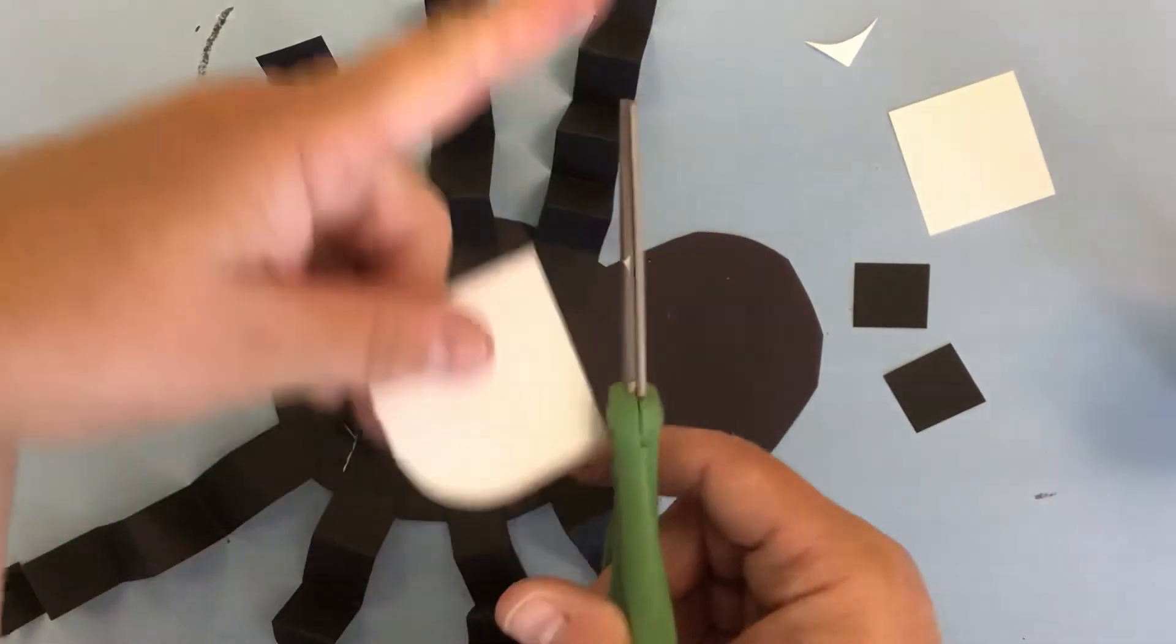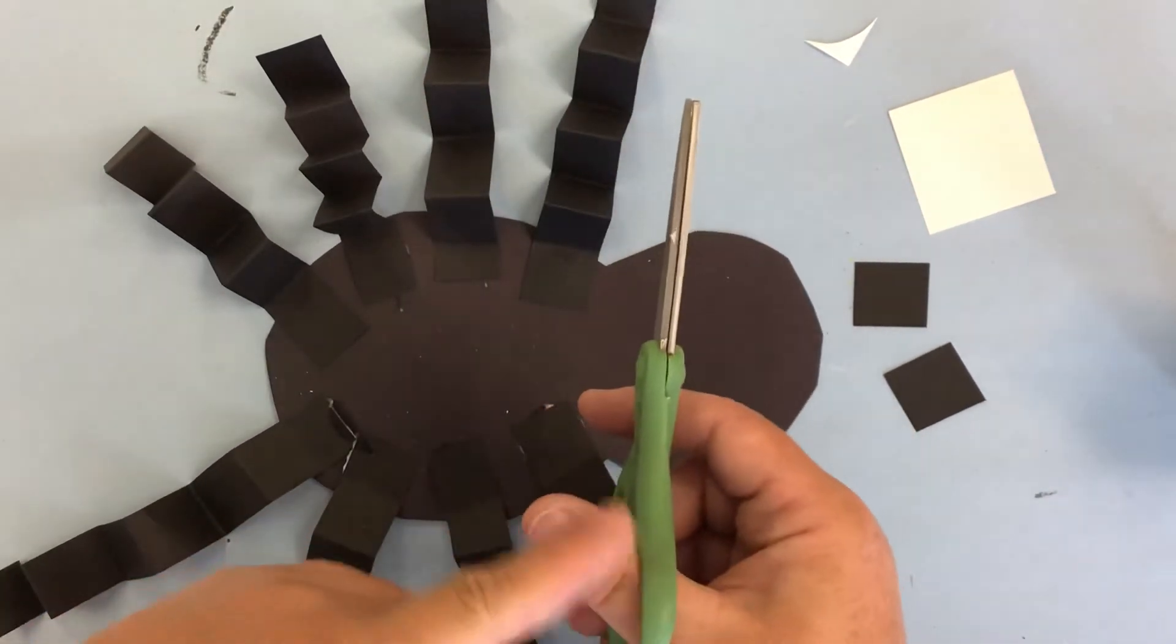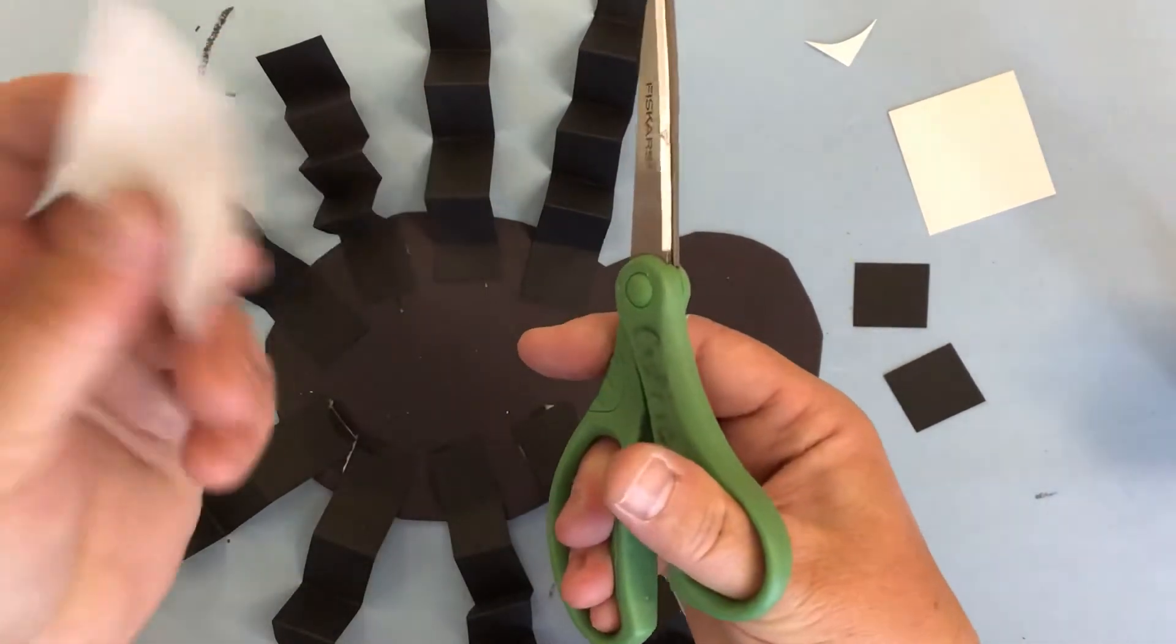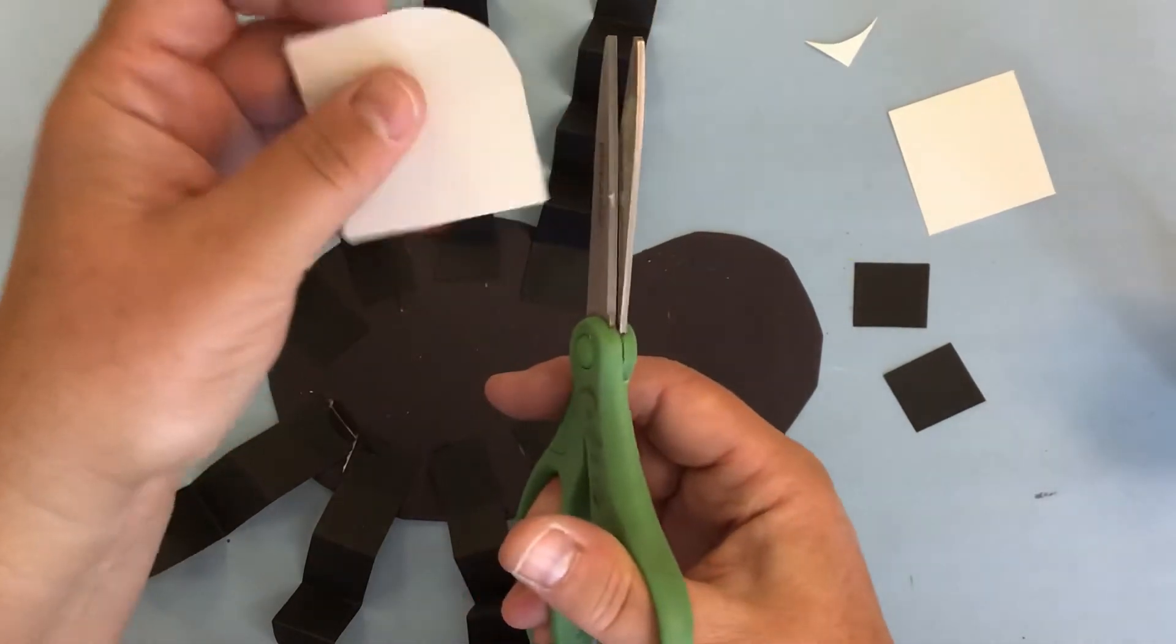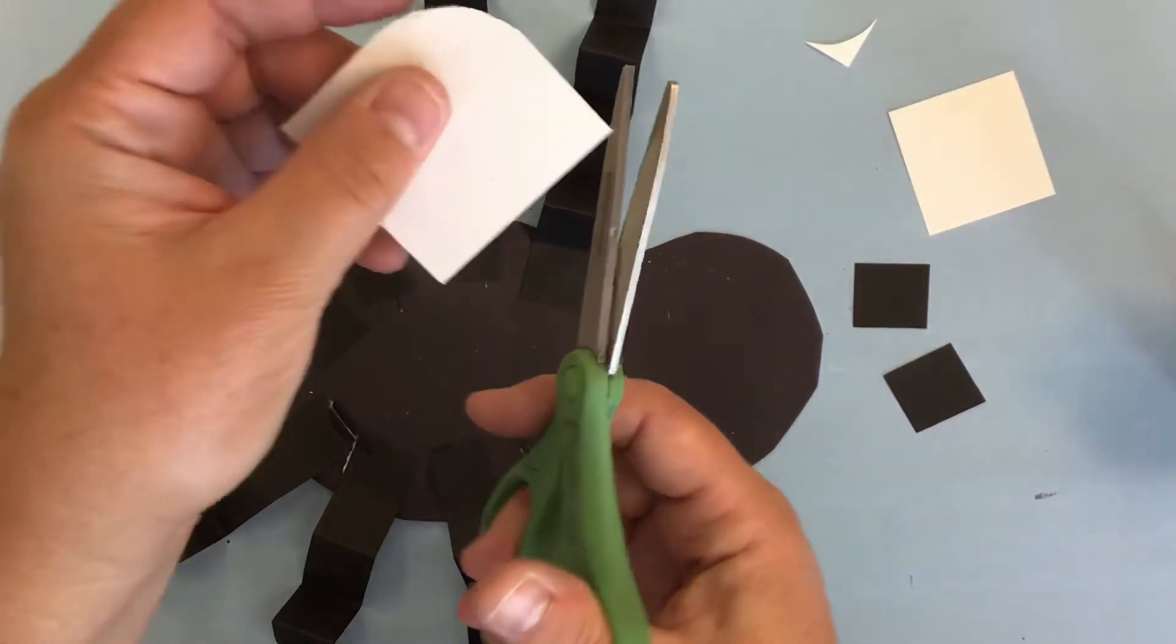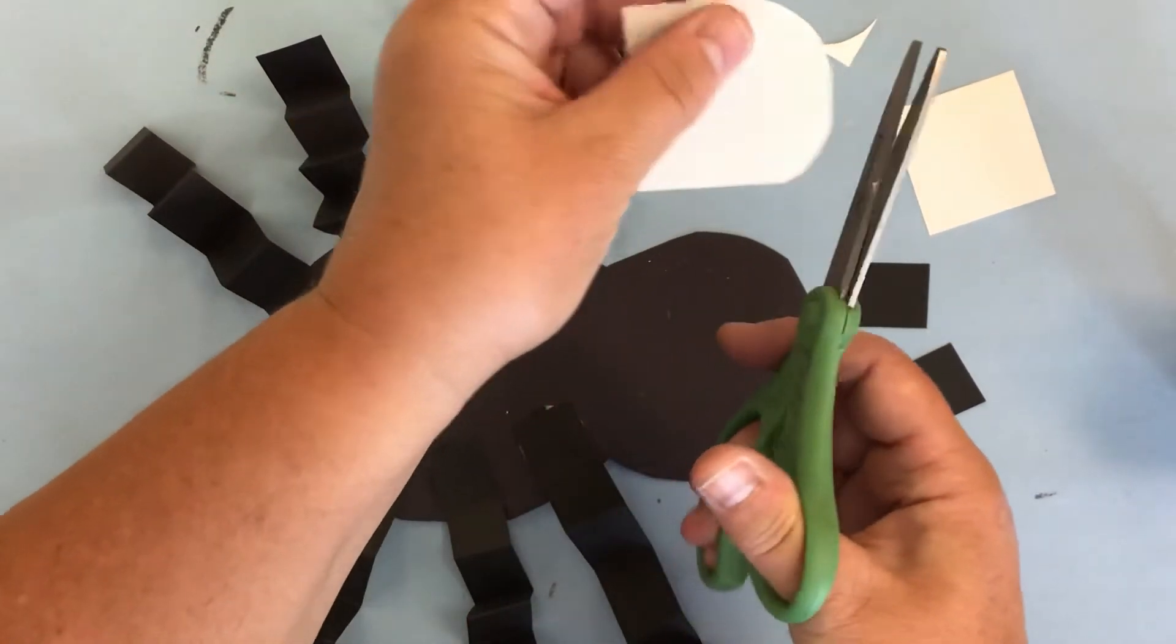My scissors are pointing out. My thumb is on top. My helping hand does the turning. So I'm going to turn my paper with my helping hand and I'm going to round the corner.